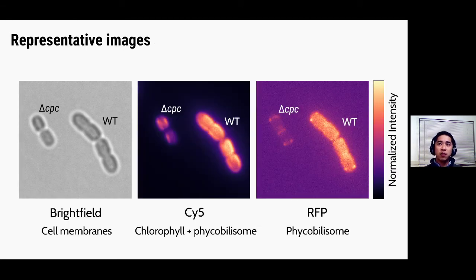So here are some representative images showing what these cells look like under the microscope. And you'll see that basically we have two populations of cells here. The smaller cells here are the delta CPC cells, and then these larger cells here are the wild-type cells. You'll notice that in the fluorescence channels that the delta CPC cells always look a little bit dimmer than the wild-type cells. This is obviously most apparent in the phycobilisome channel, where these cells are very dim due to the fact that they no longer have the phycobilisome rods.